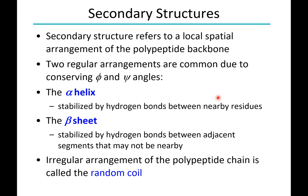An alpha helix is going to be stabilized by hydrogen bonds between very nearby residues. The beta sheet is going to be stabilized by hydrogen bonds between adjacent segments, but they may not be quite as nearby as our alpha helix.